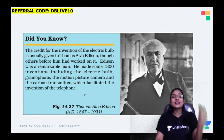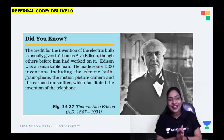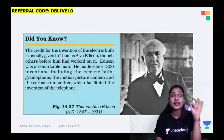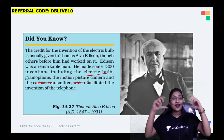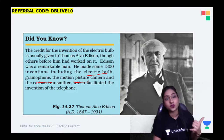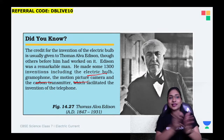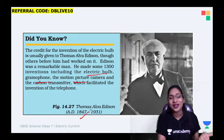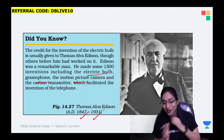Who is the father of the electric bulb? The credit for the invention of the electric bulb is usually given to Thomas Alva Edison. Many people had actually worked on this concept before him, but Edison was a remarkable man. He made 1,300 inventions including the electric bulb, gramophone, motion picture camera, and carbon transmitter which facilitated the invention of the telephone. He was born in 1847 and lived until 1931.